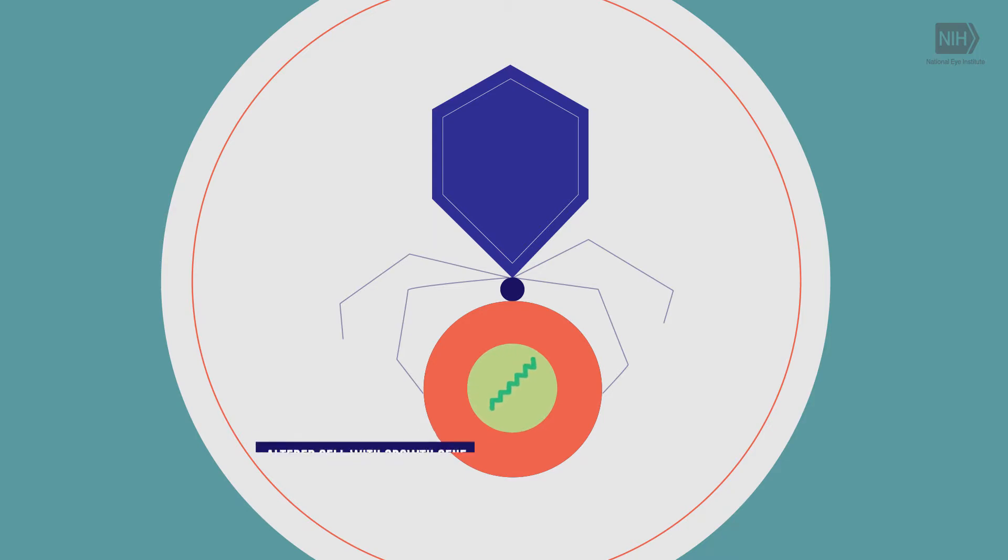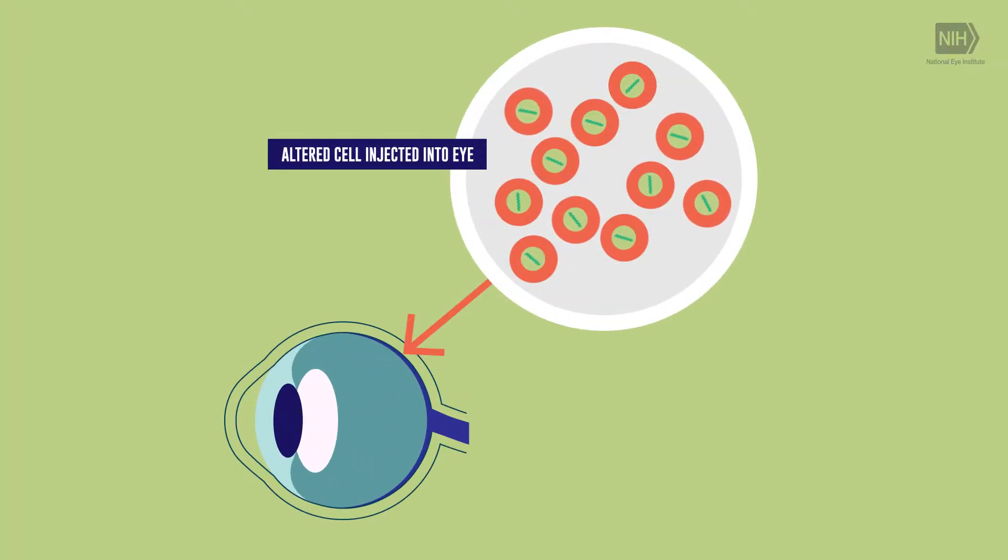A cargo for, say, growth, to keep cells that are sick in the eye from disappearing and shrinking. And so you can take that virus with this cargo, this cell growth gene, if you will, inject into the eye, and then some of the cells within the eye will get infected by the virus, but again to make them healthier, not to make them sicker.